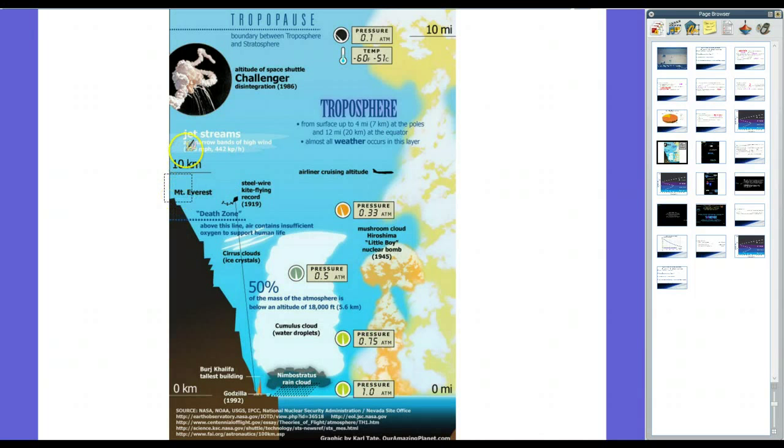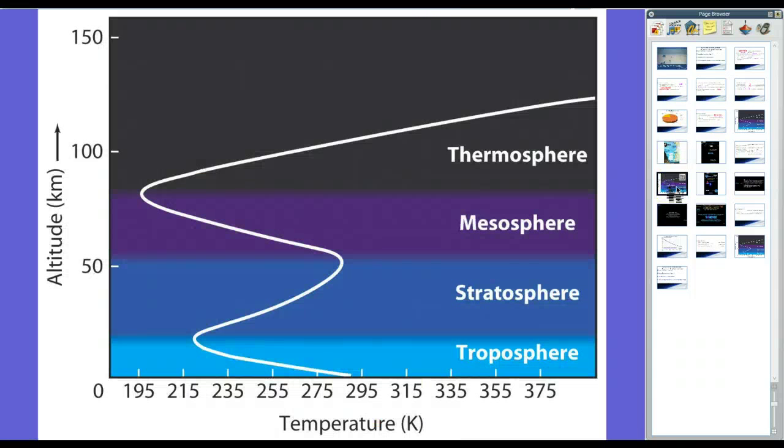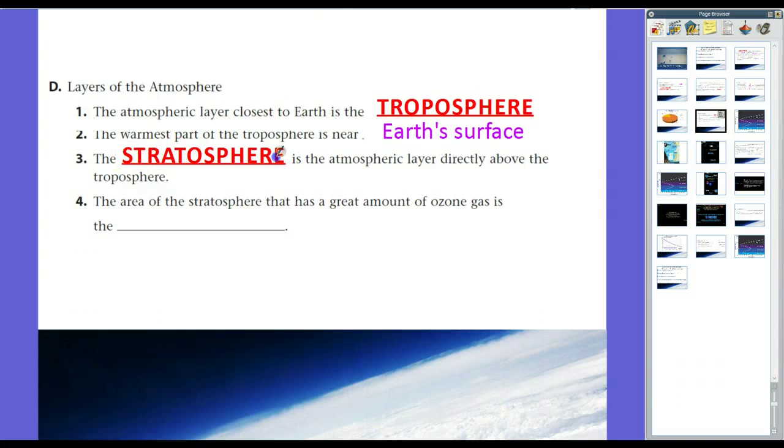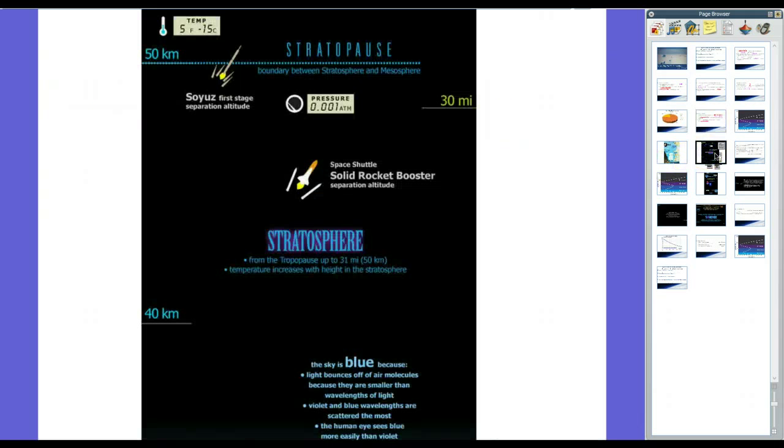Almost all weather occurs in this layer. For example, see Mount Everest, way up here. The jet streams. Clouds at sea levels, one atmosphere. The tallest building in the world. Above this line is the death zone. Air contains insufficient oxygen to support human life. So when climbers climb up on Mount Everest, they have to pack their own oxygen because it's too thin. And so from there, we have what's called the tropopause, which is the line that blurs between the troposphere and the next part of the atmosphere, which is known as the stratosphere. It is the layer directly above the troposphere. And the area of the stratosphere that has a great amount of ozone gas is what we call the ozone layer, which we'll talk about in a second.